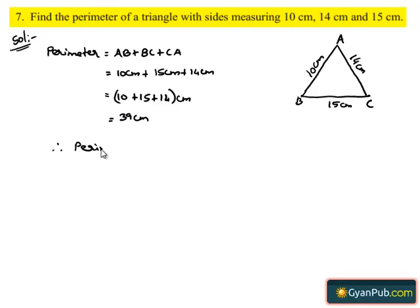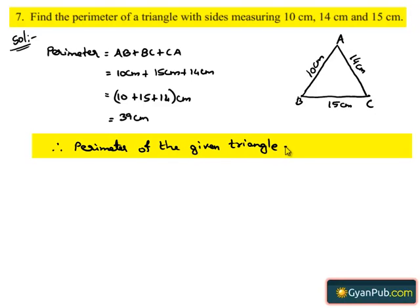Therefore perimeter of the given triangle is equal to 39 cm.